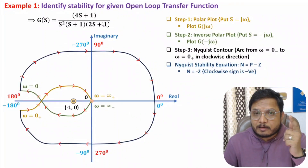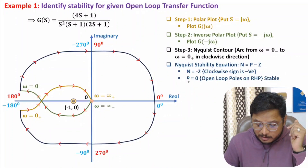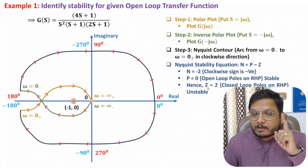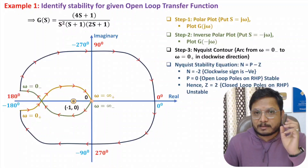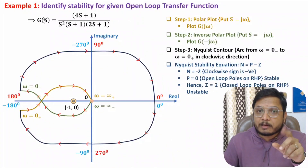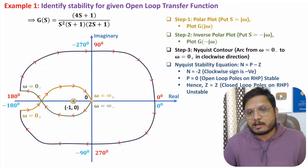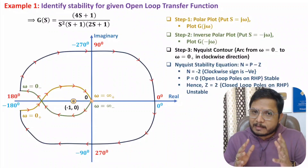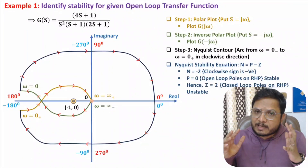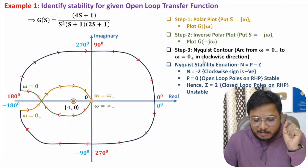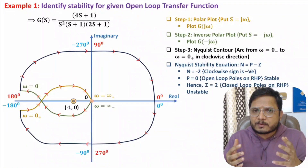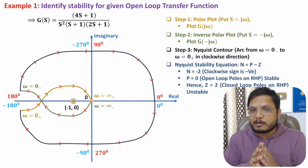Since P equals 0 and N equals minus 2, we get Z equals 2. This means the closed loop system has two poles in the right half plane, so the closed loop system is unstable. Therefore, for this open loop transfer function the open loop system is stable, but the closed loop system is unstable. In future videos I will solve comprehensive examples following all the steps of the Nyquist plot. Thank you for watching.